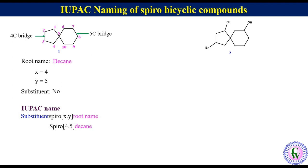Compound two: here also the five-membered ring will be numbered first. In this example, the two atoms of the five-membered ring attached to the spiroatom are not equivalent — they are different. The carbon bearing the chloro substituent gets number one, and the numbering up to the spirocarbon will be 1, 2, 3, 4 and 5. The six-membered ring will be numbered in such a way as to give the lowest possible number to the carbon bearing the hydroxyl group, so the numbering goes clockwise: 6, 7, 8, 9 and 10.